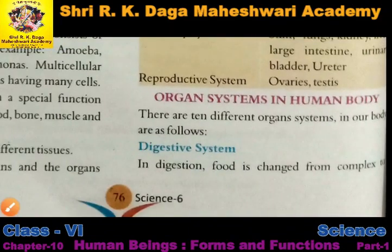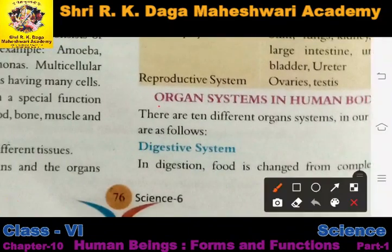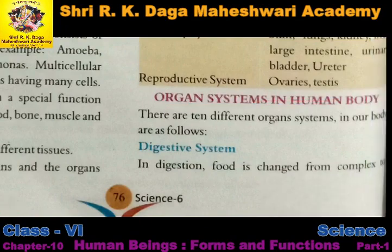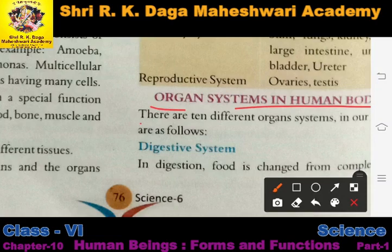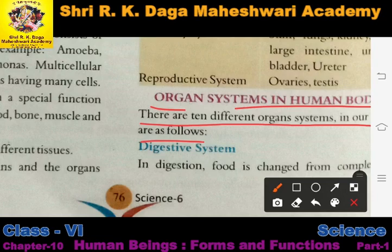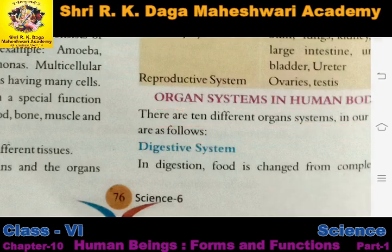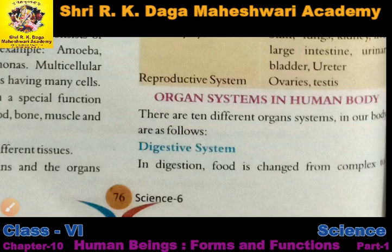Now we will study all the organs in the human body in detail. There are 10 different organ systems in our body. These 10 systems perform different functions in our body, and we will study all of them in detail.